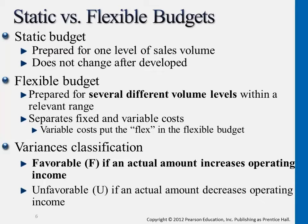This is done before actual outputs are there, and then we use it to compare against actual results. For example, we set this level, and at the end, actual results show we sold 10,000 units. Then we just pick the flexible budget's 10,000 units category and see if the two are the same.